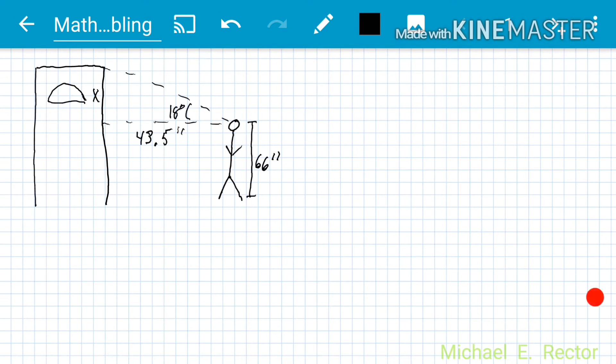So the way that we figure this out is we're going to have to use tangent. Tan of 18 degrees equals, now tangent is opposite over adjacent, so X over 43.5 inches.